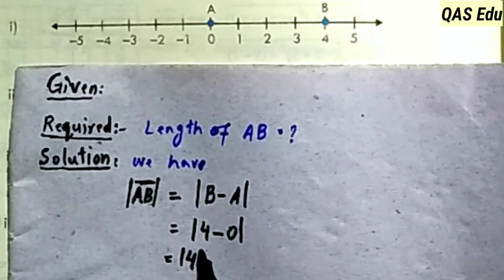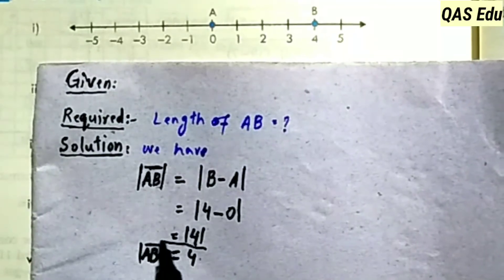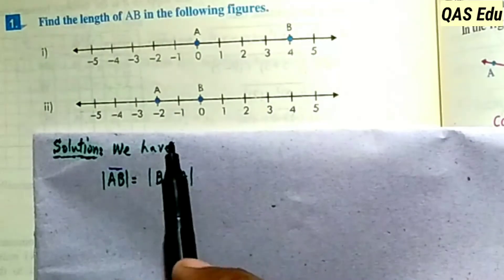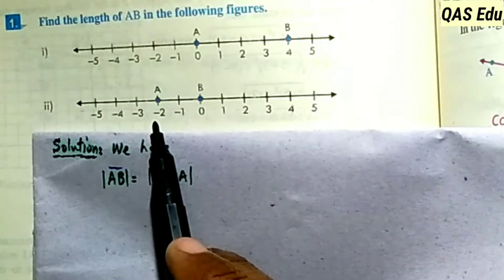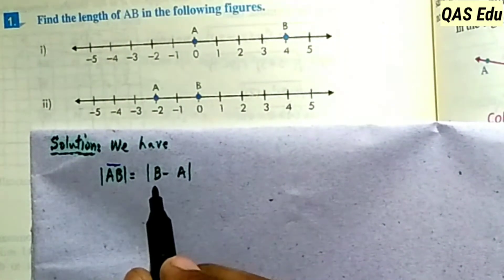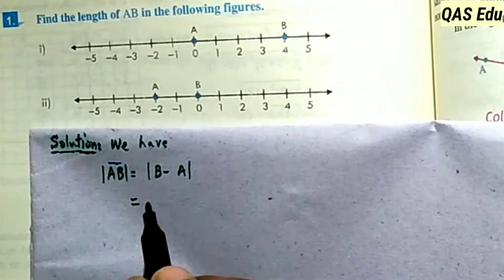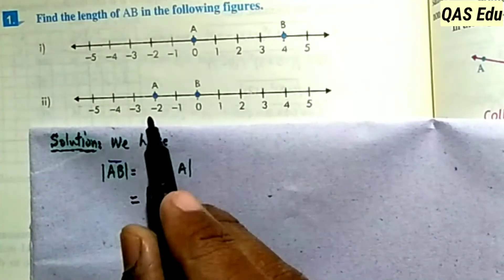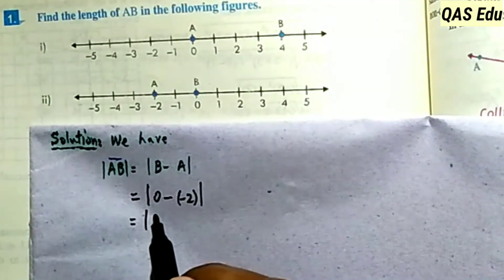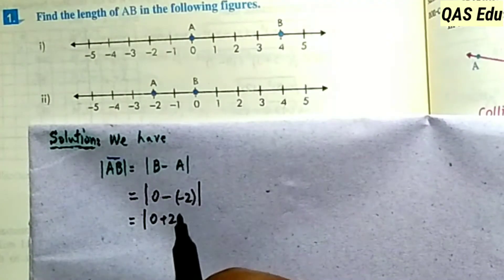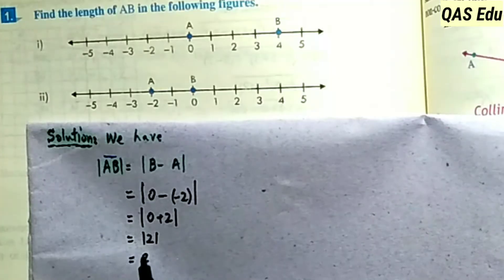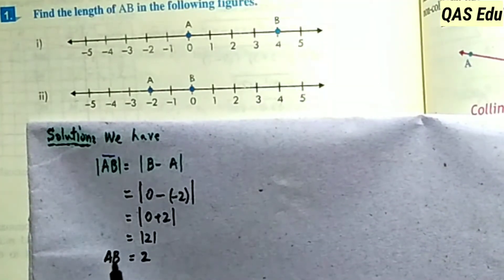The length of AB is found using the procedure: b minus a. So AB = |0 - (-2)|. Using the bracket, that is 0 minus minus 2, which equals 0 plus 2, equals 2. So the AB length is 2 units.